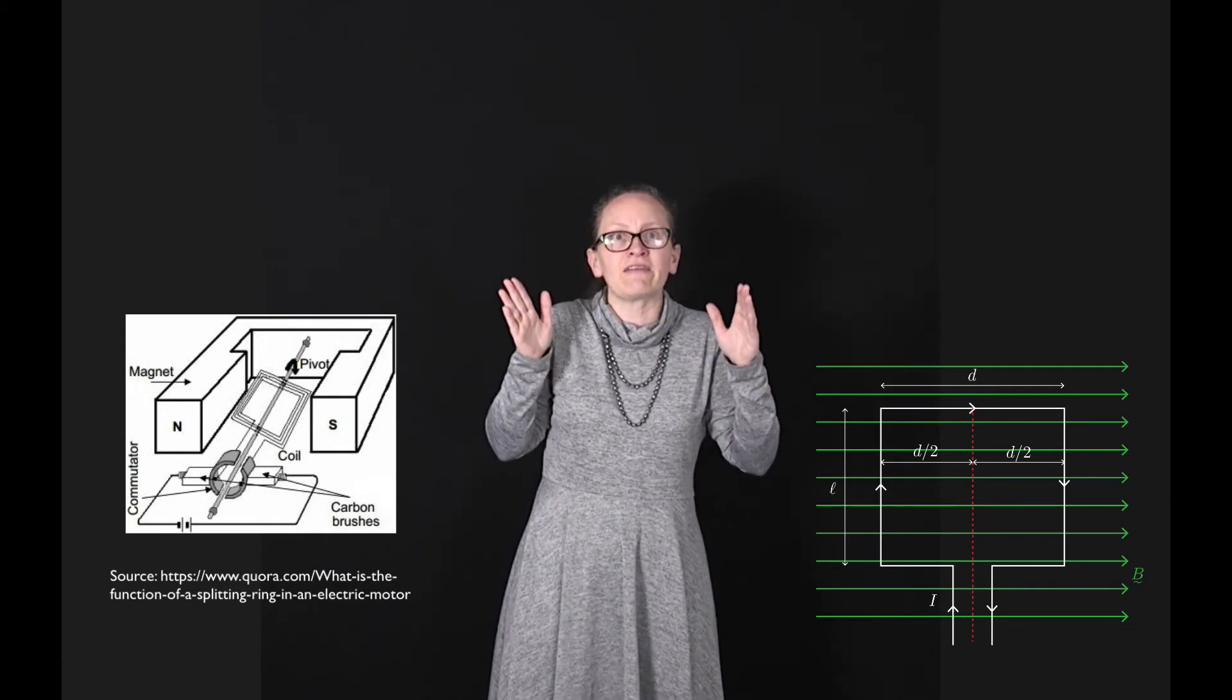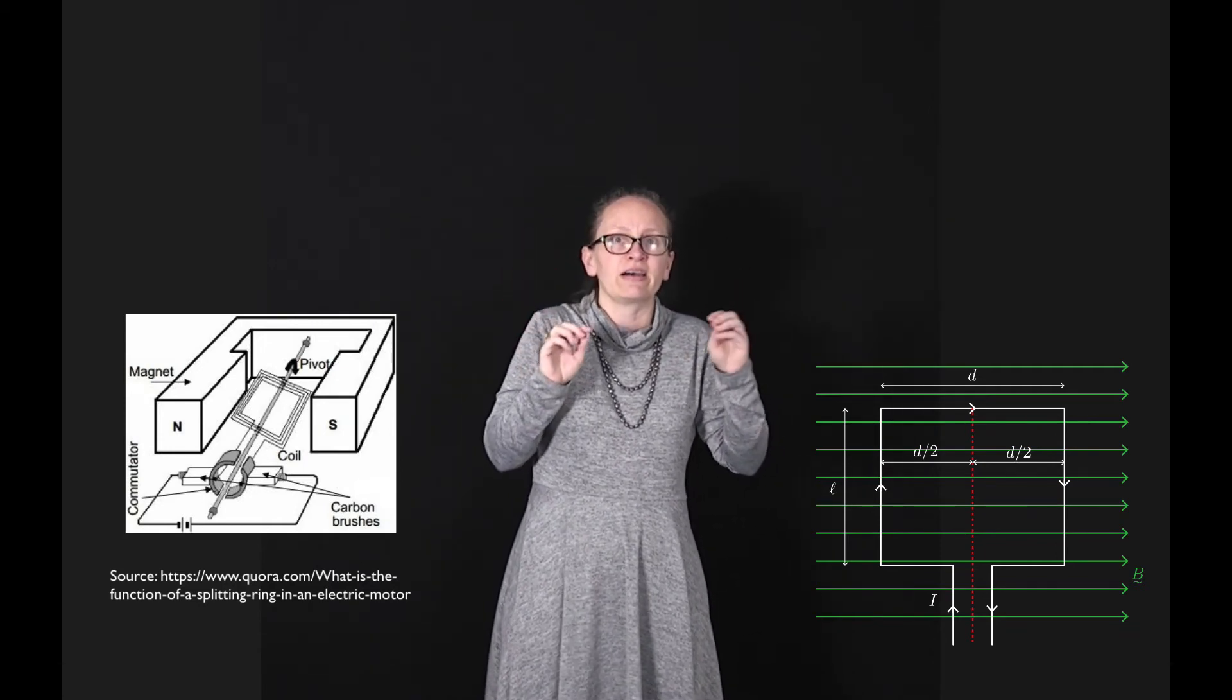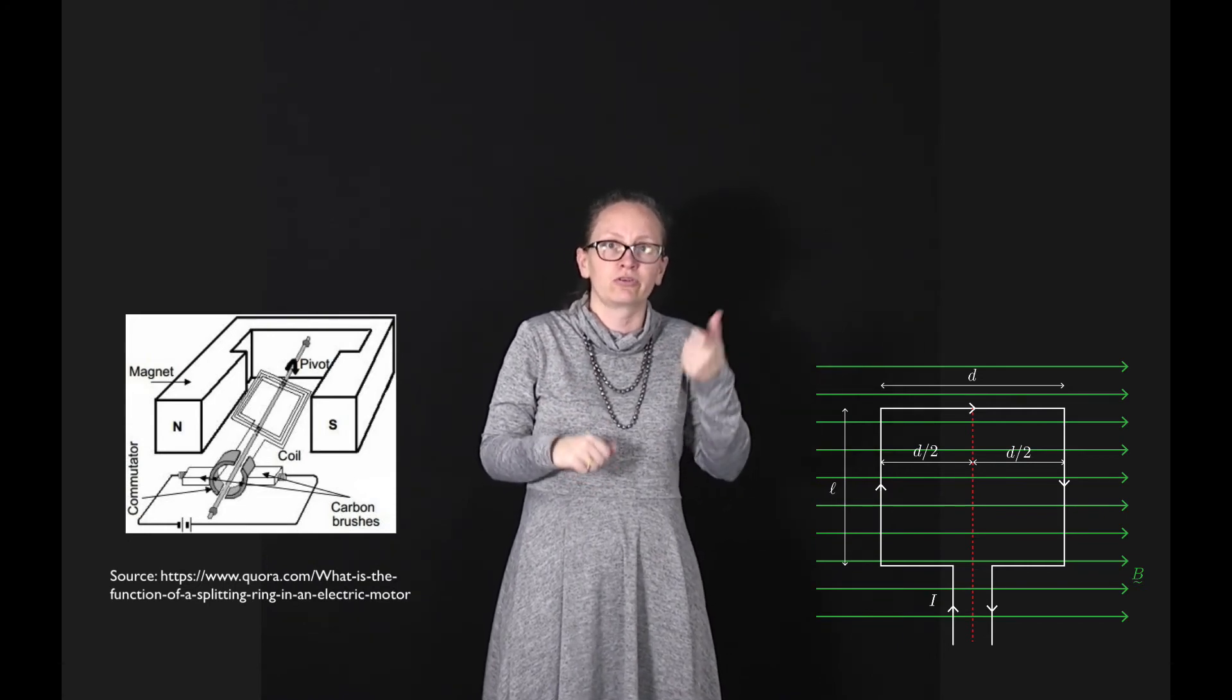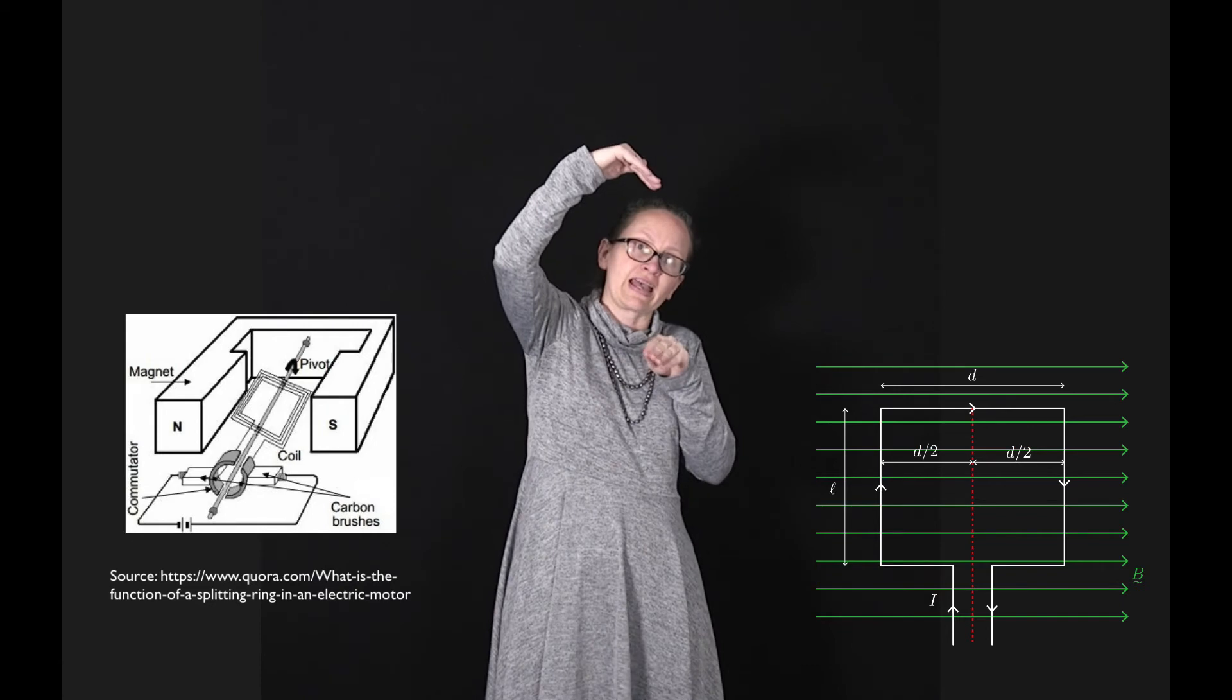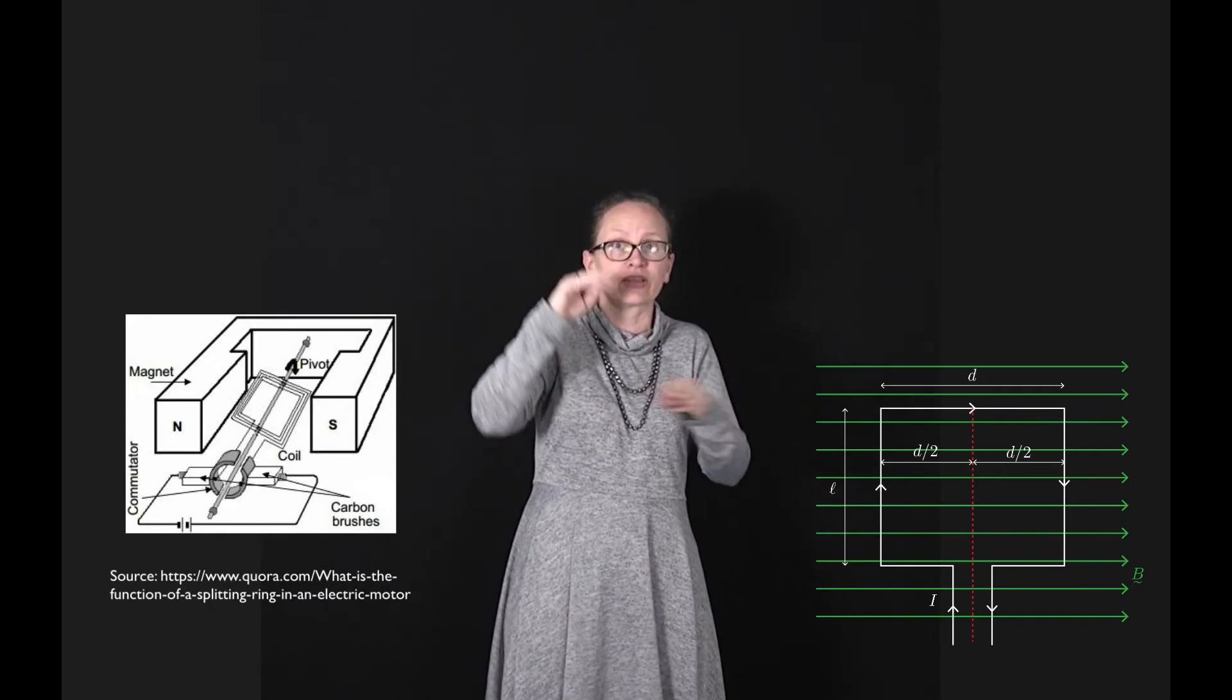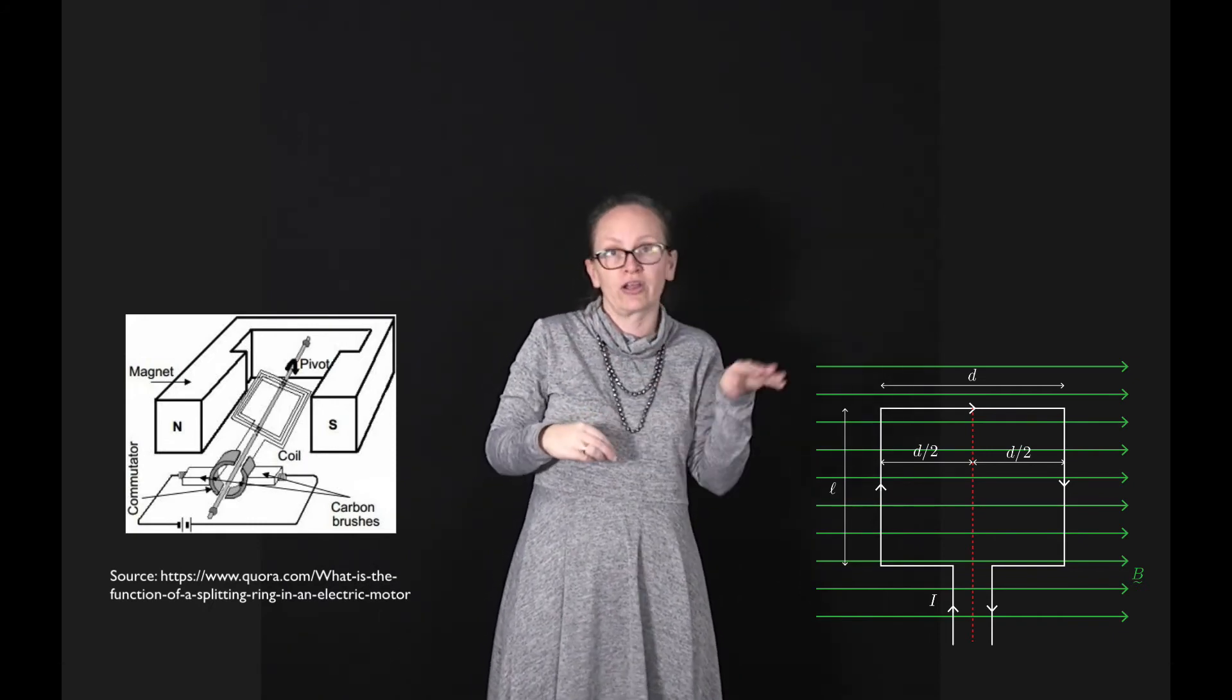If we have a split ring commutator, this will switch the direction that the current flows through the loop once it gets to that vertical position, so the torque will keep acting in the same direction, keeping our coil turning.